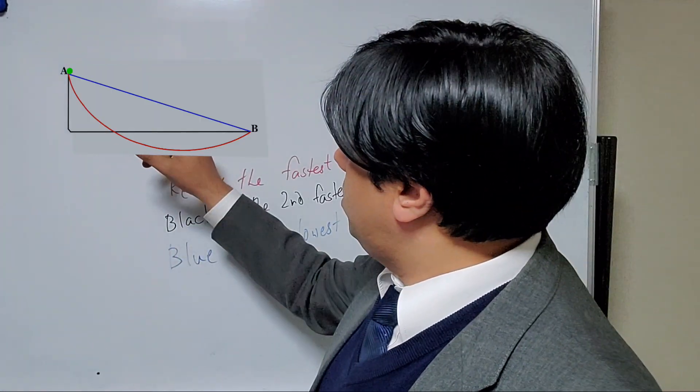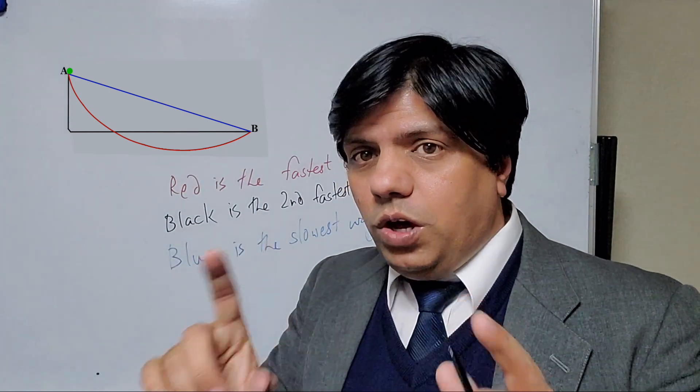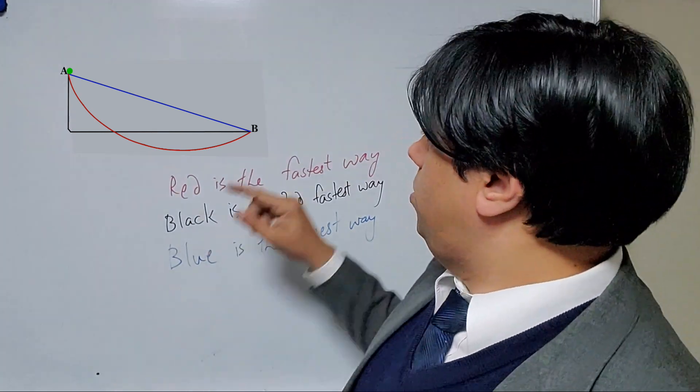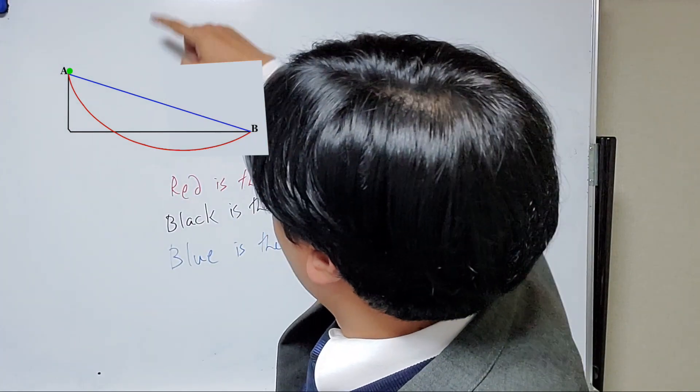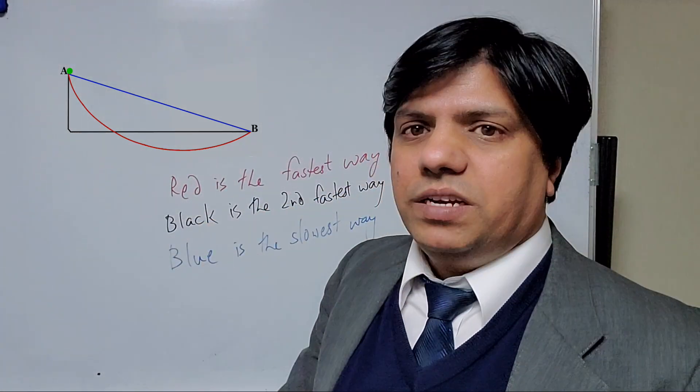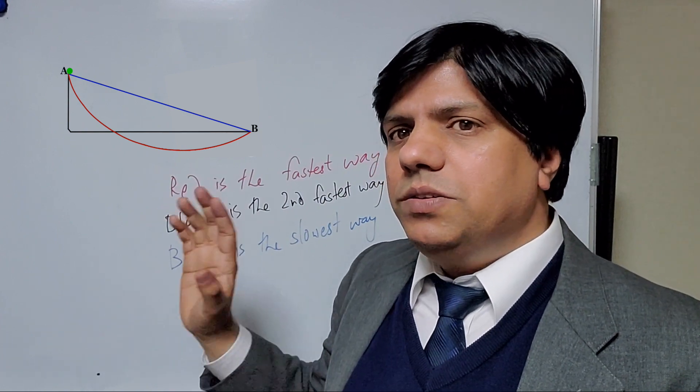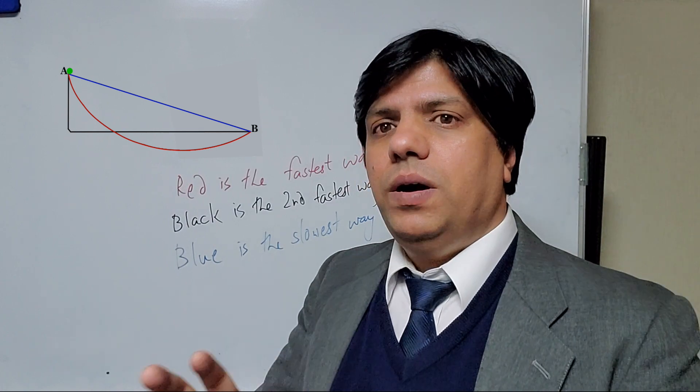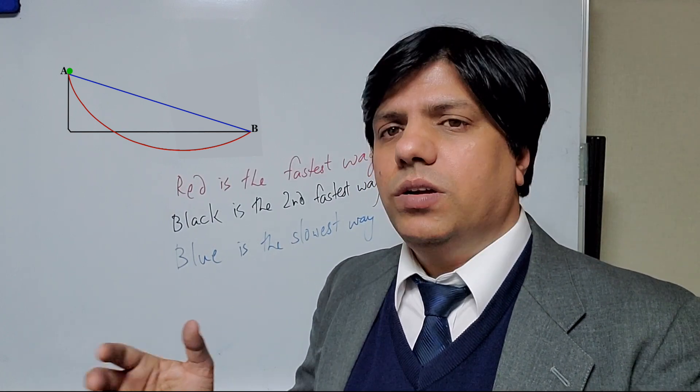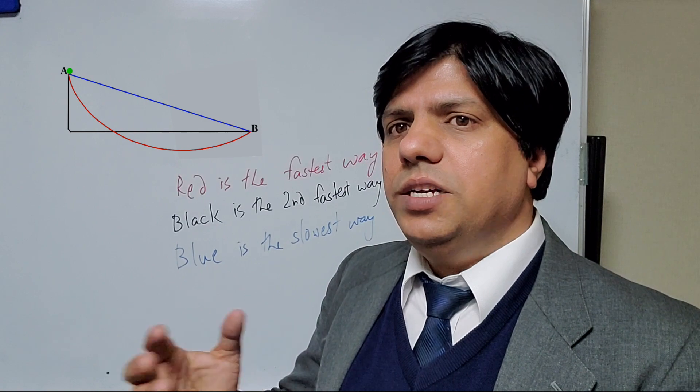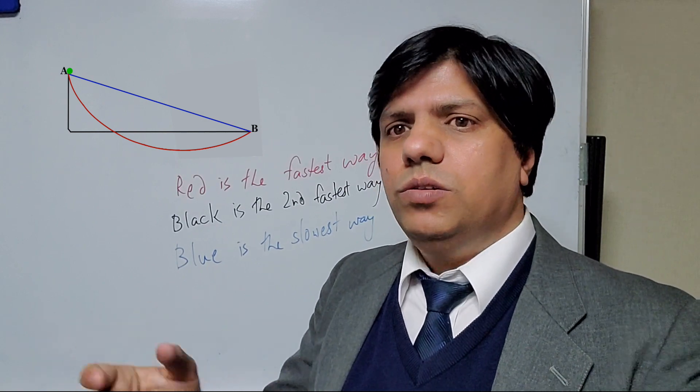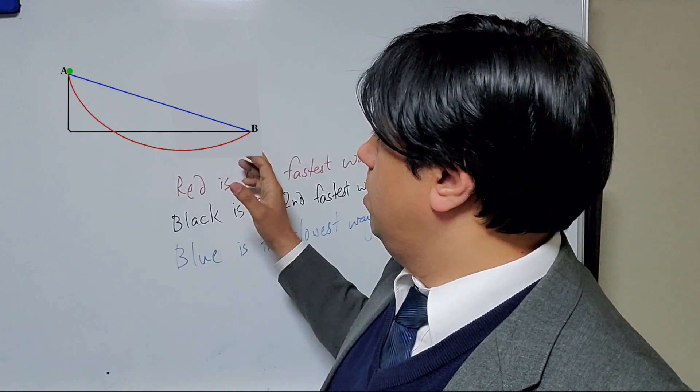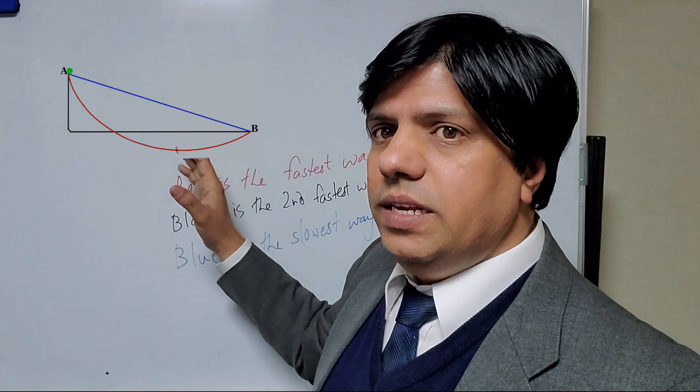And this curve, by the way, is not part of a circle. If you take this curve, it will not make a perfect circle. This curve is basically part of what you call an isochronous curve. Iso means similar, chrono means time. So, it's actually a different curve than a circle.